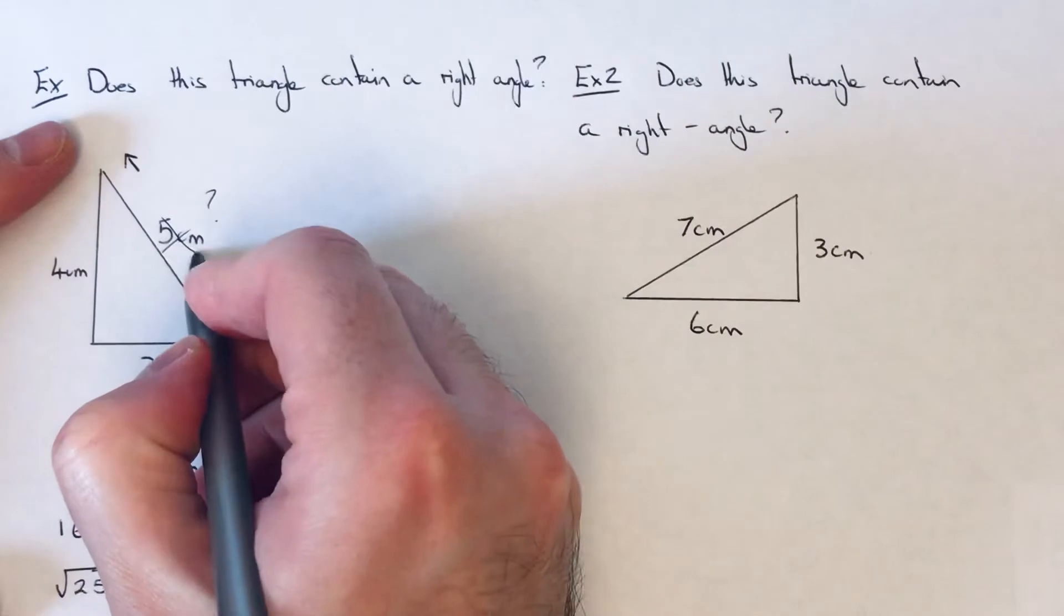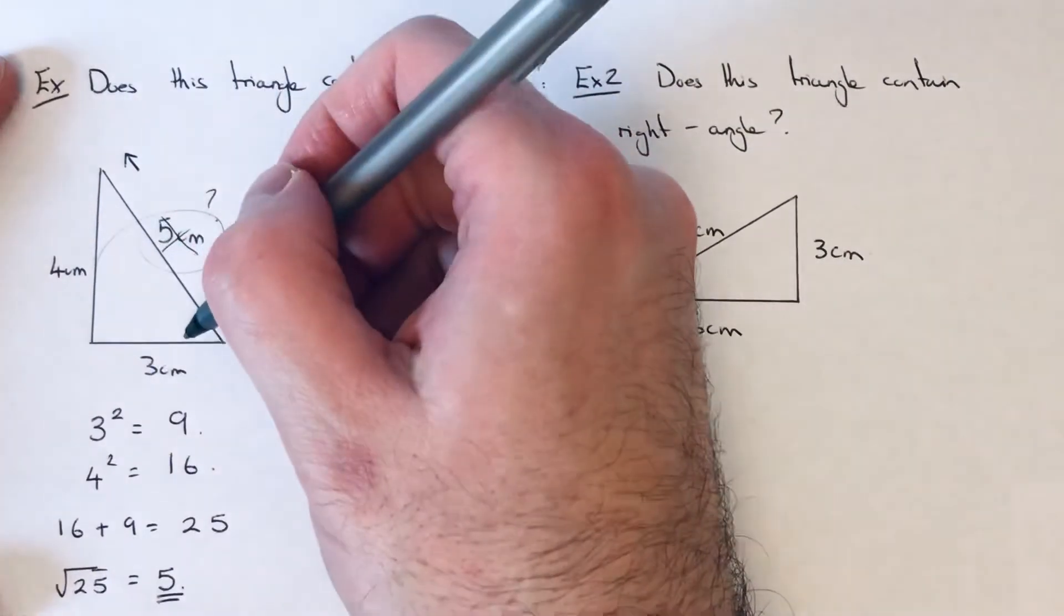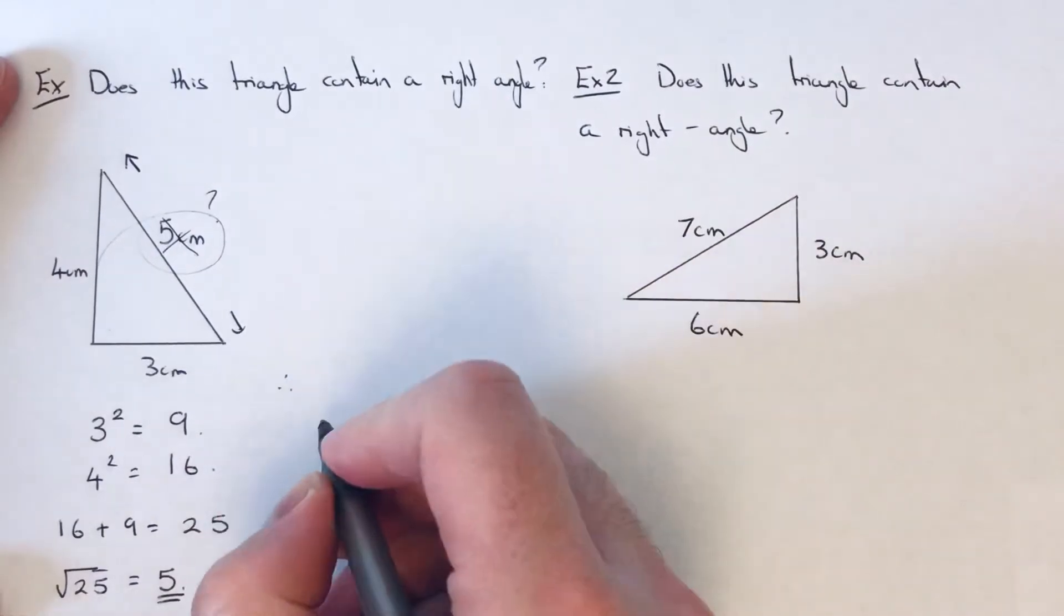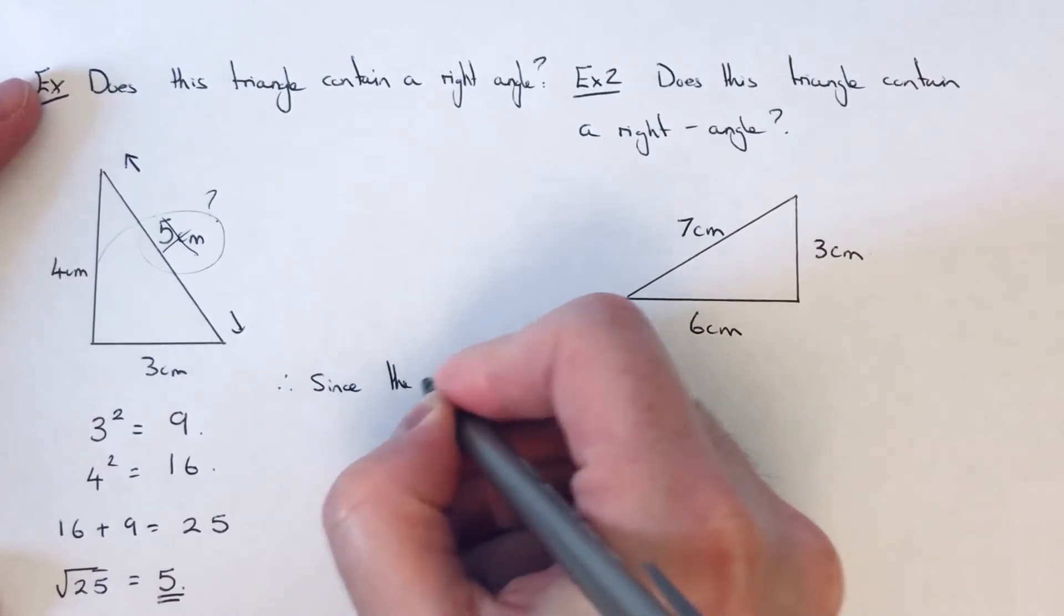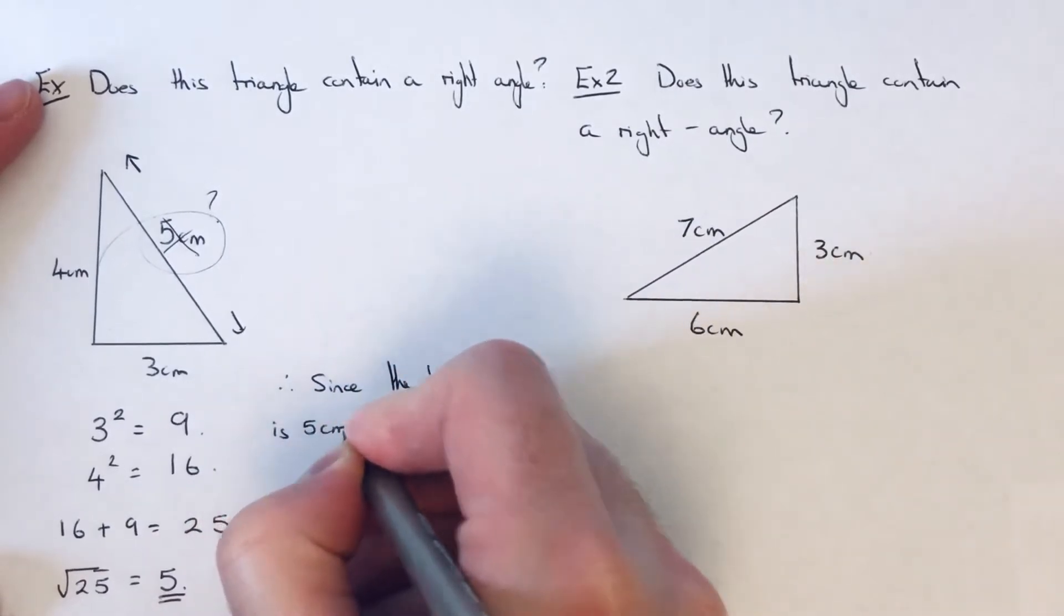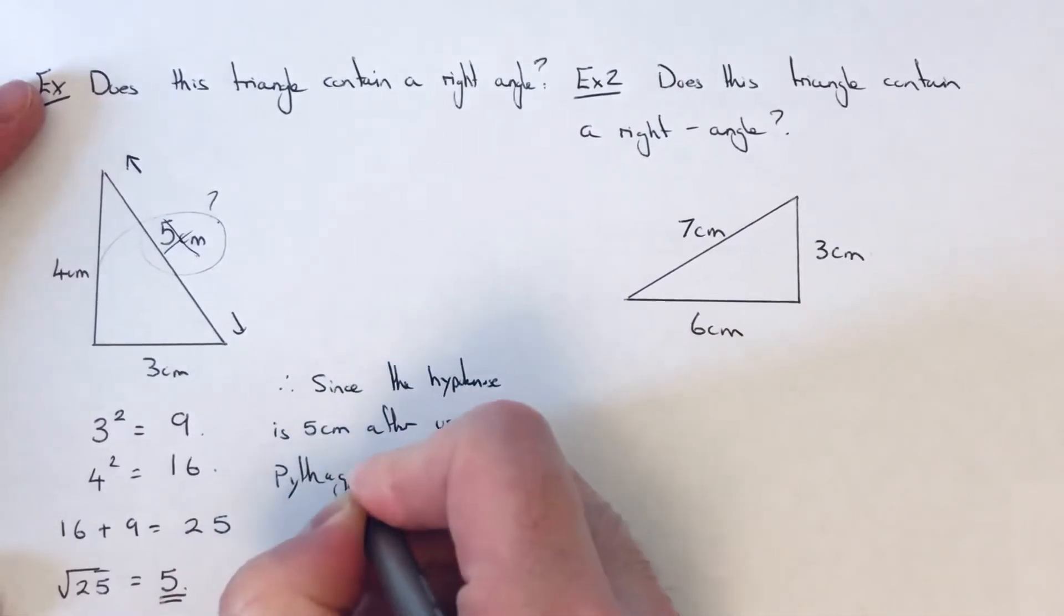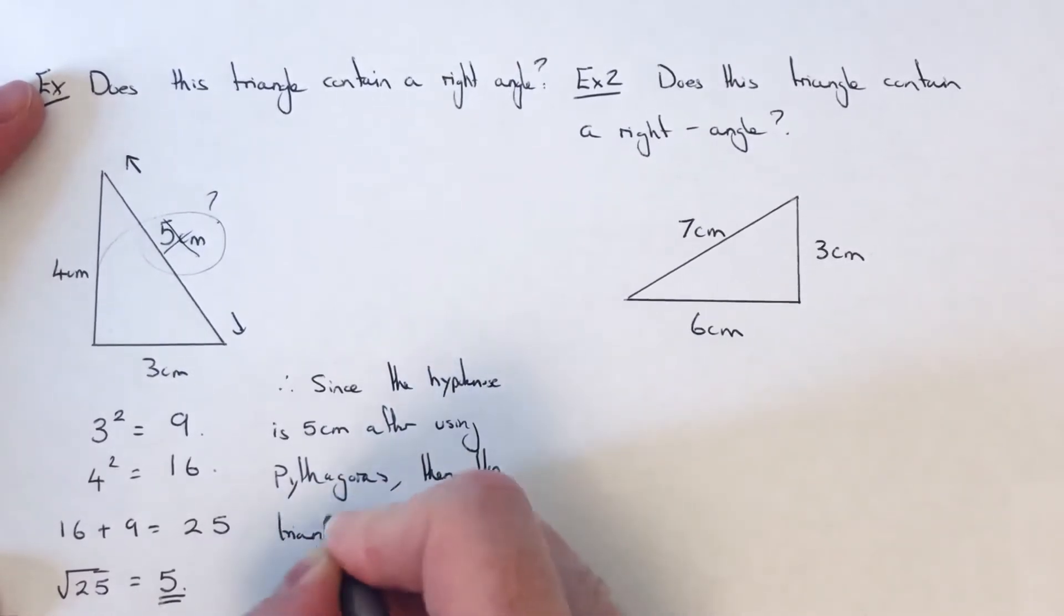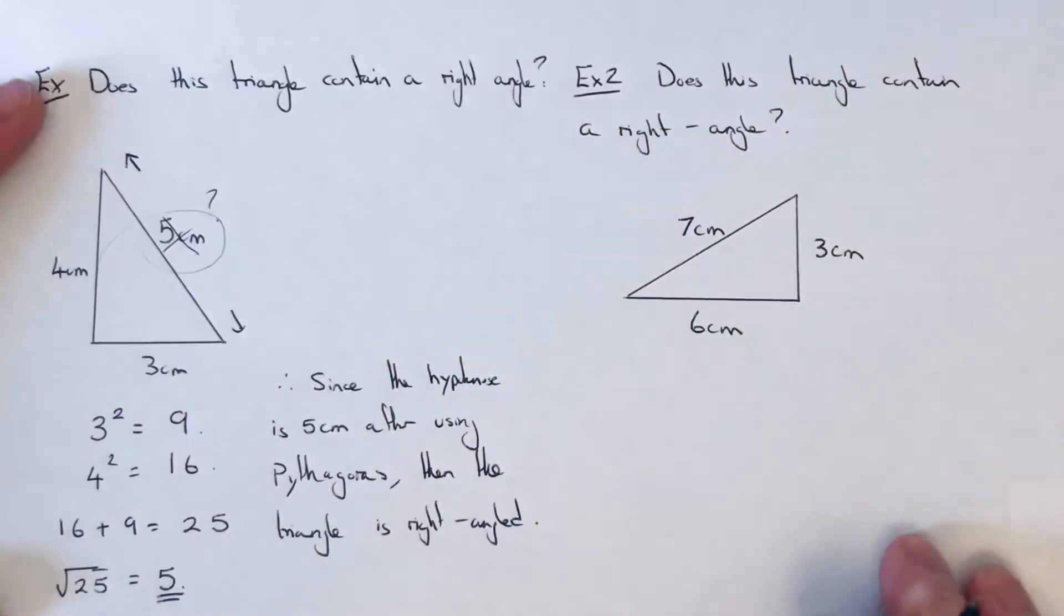As you can see, it's come out to the hypotenuse, which is 5. So it looks like this is a right angle triangle because it's given us the hypotenuse. I'm just going to put a little comment on the side of the page: Since the hypotenuse is 5 centimeters after using Pythagoras, then the triangle is a right angled.